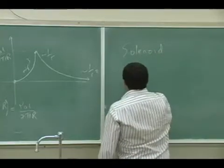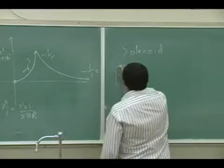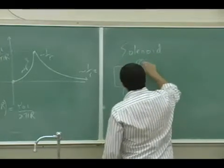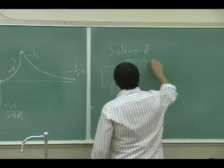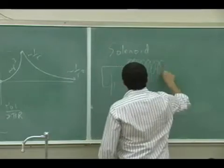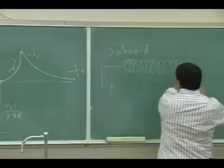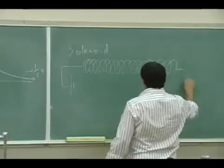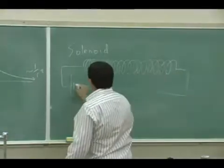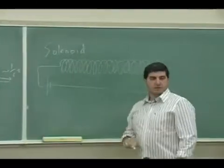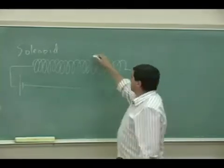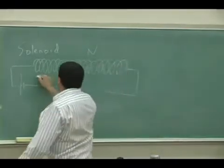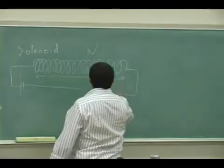A solenoid is by definition something that has turns, and you keep turning, turning, turning — it's relatively long. It has N number of total turns and a length L.